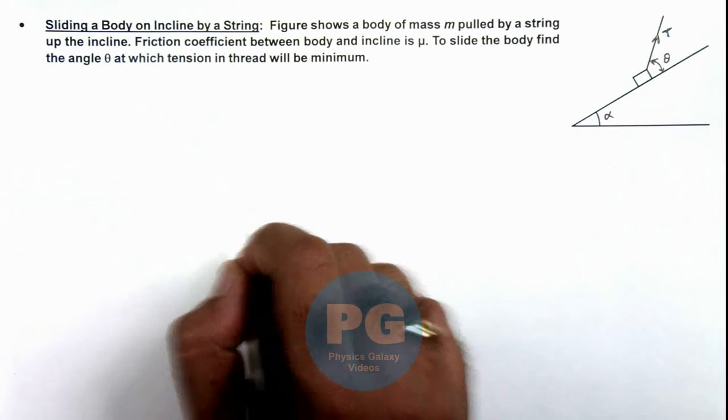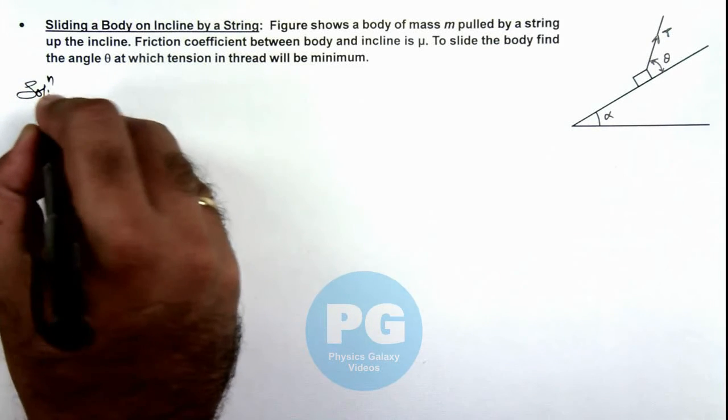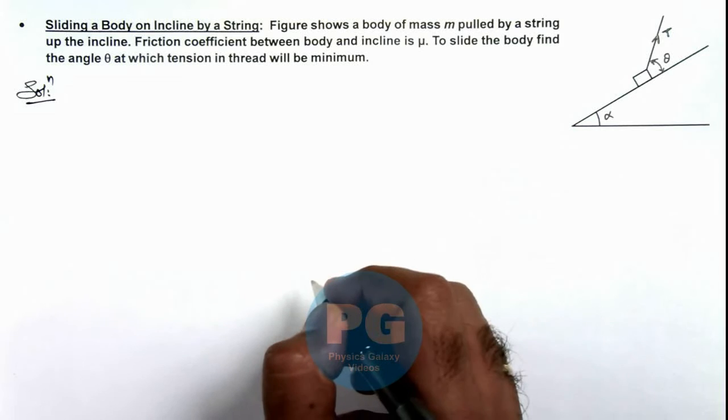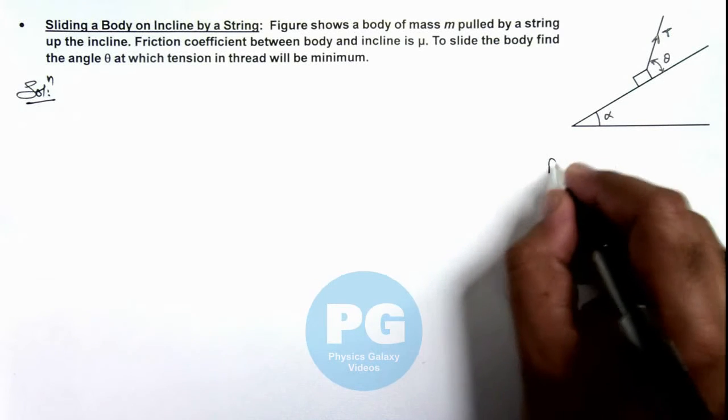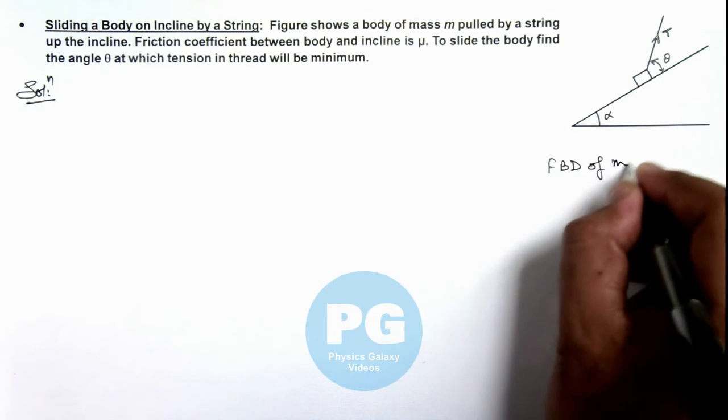So in this situation, if we just have a look on the free body diagram of this body, we can draw the FBD of mass m.